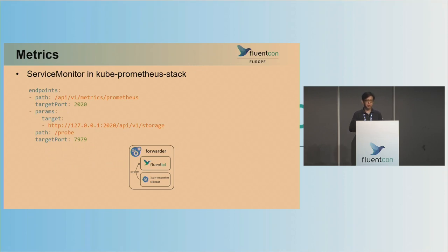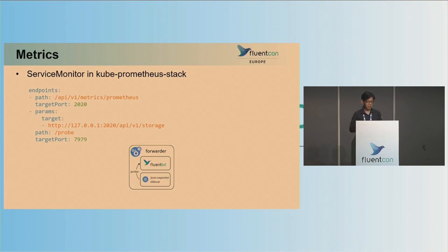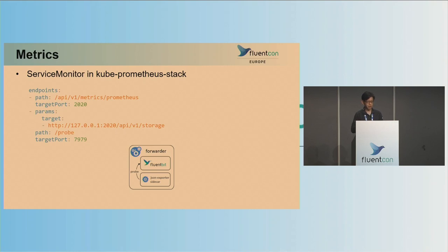We use the kube Prometheus stack to deploy our Prometheus. This is our service monitor configuration. Service monitor is a CRD — it basically tells Prometheus where to scrape the metrics. The first endpoint is the metrics endpoint on the FluentBit container. The second endpoint is the probe endpoint on the JSON sidecar container. When Prometheus scrapes this probe endpoint, it fetches the JSON metrics from the target, converts them into Prometheus format, and sends the result back in the response.